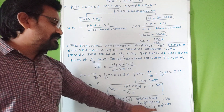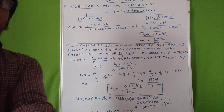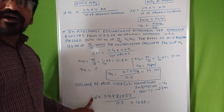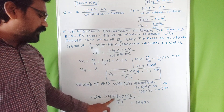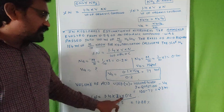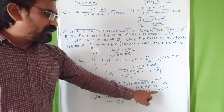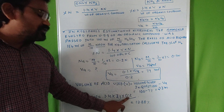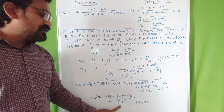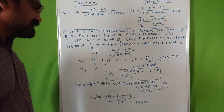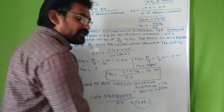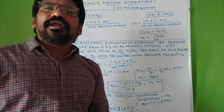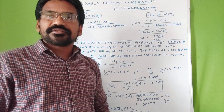So volume of acid used = 100 − 77 = 23 ml. Substituting into the formula: 1.4 × 23 × 0.2 ÷ 0.5, you get a percentage of nitrogen of 12.88%. This is the simple way to calculate Jeldahl's method numericals. Thank you.